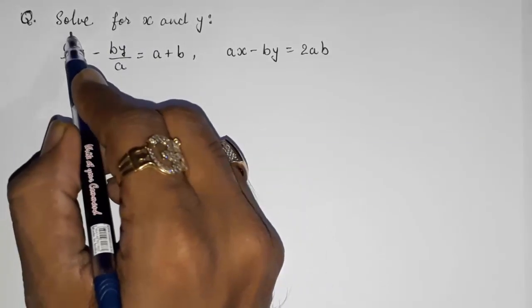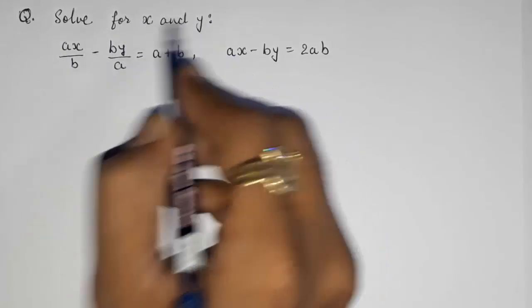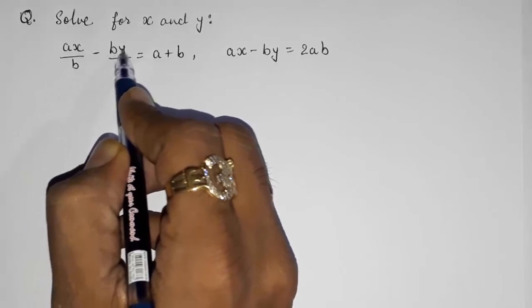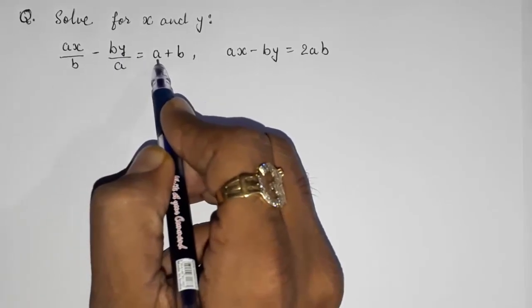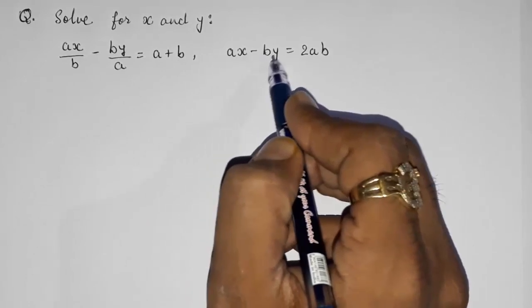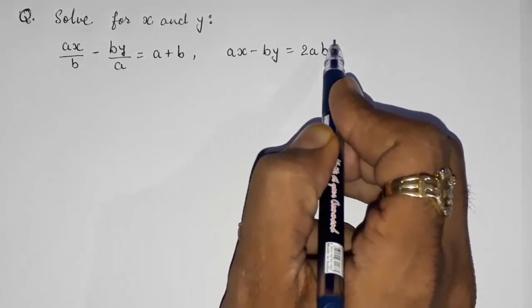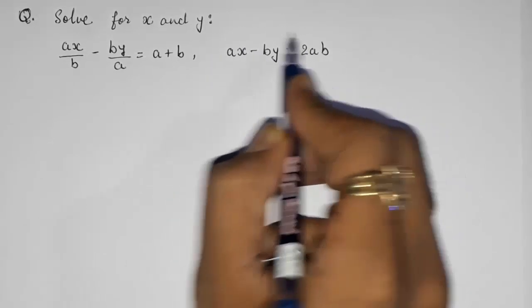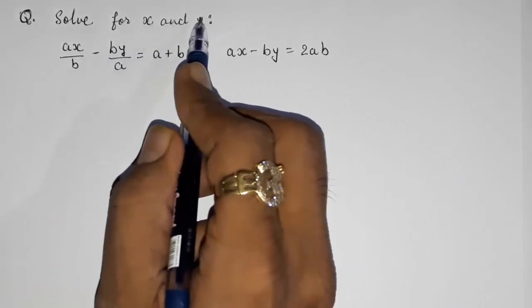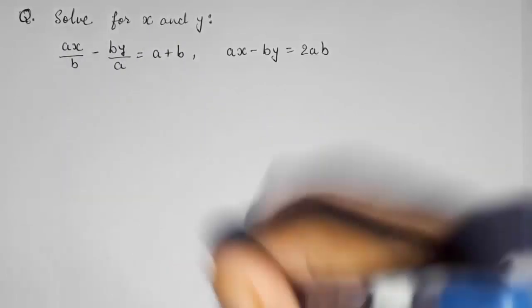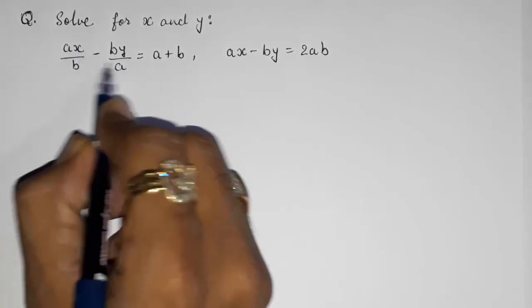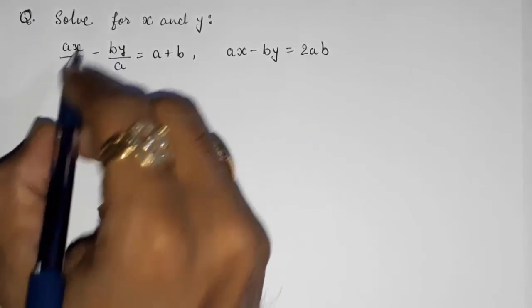Let us start. Solve for x and y. First question: ax/b minus by/a equals a plus b, and ax minus by equals 2ab. We are having two equations and we have to find x and y. First we have to arrange it in standard form, so we have to find out the LCM.